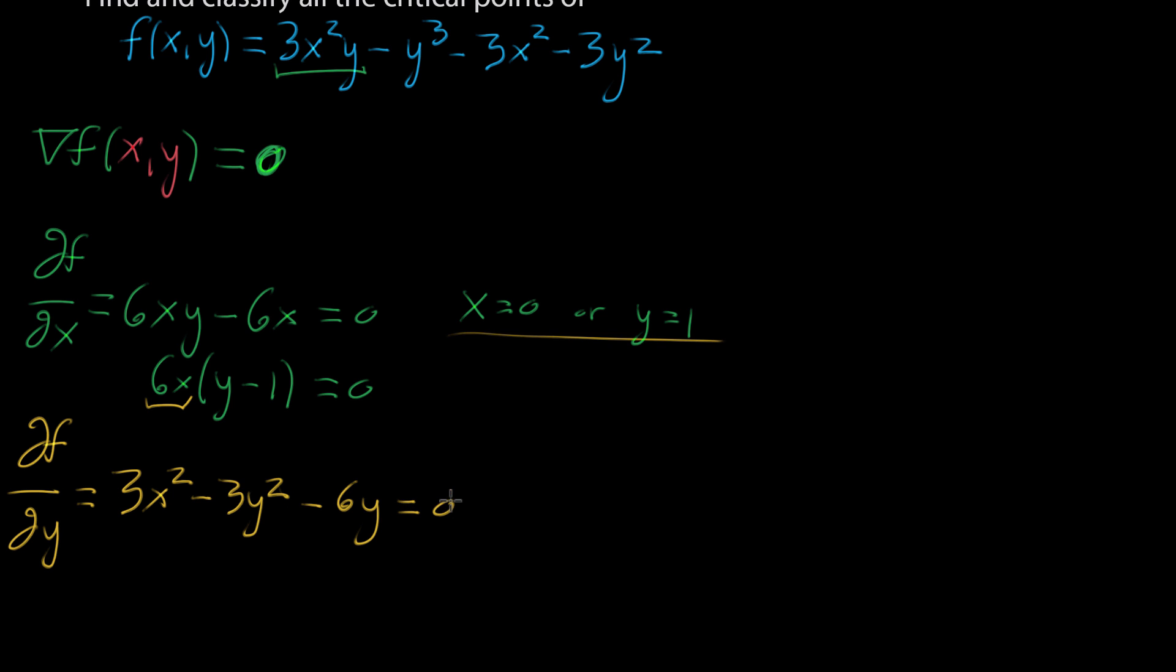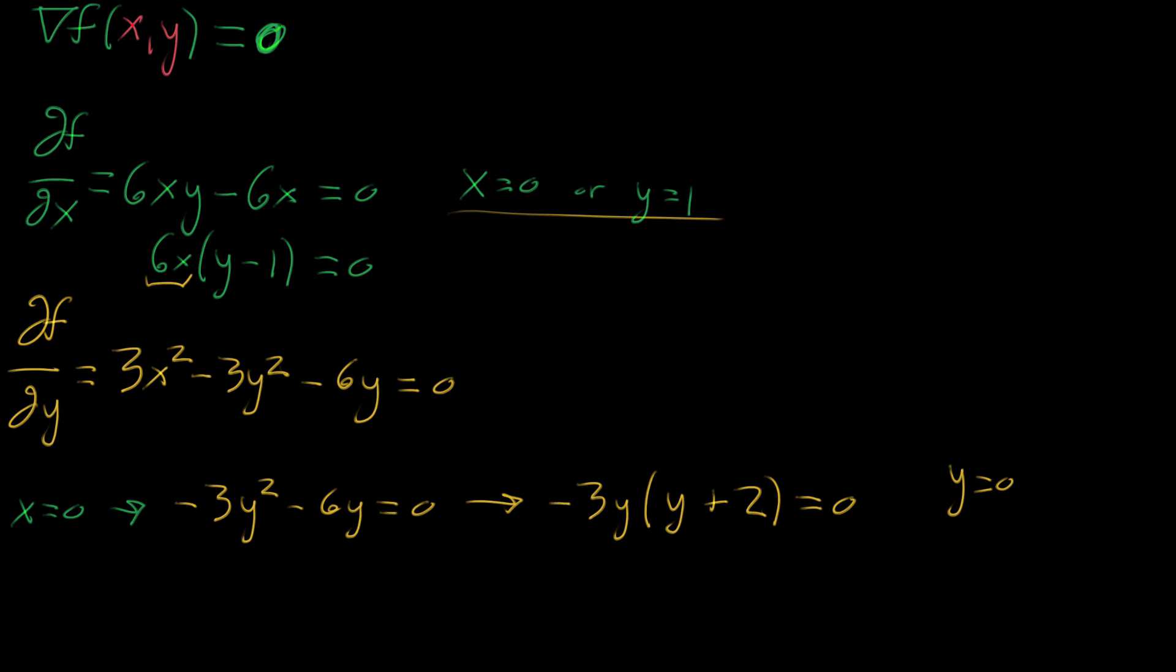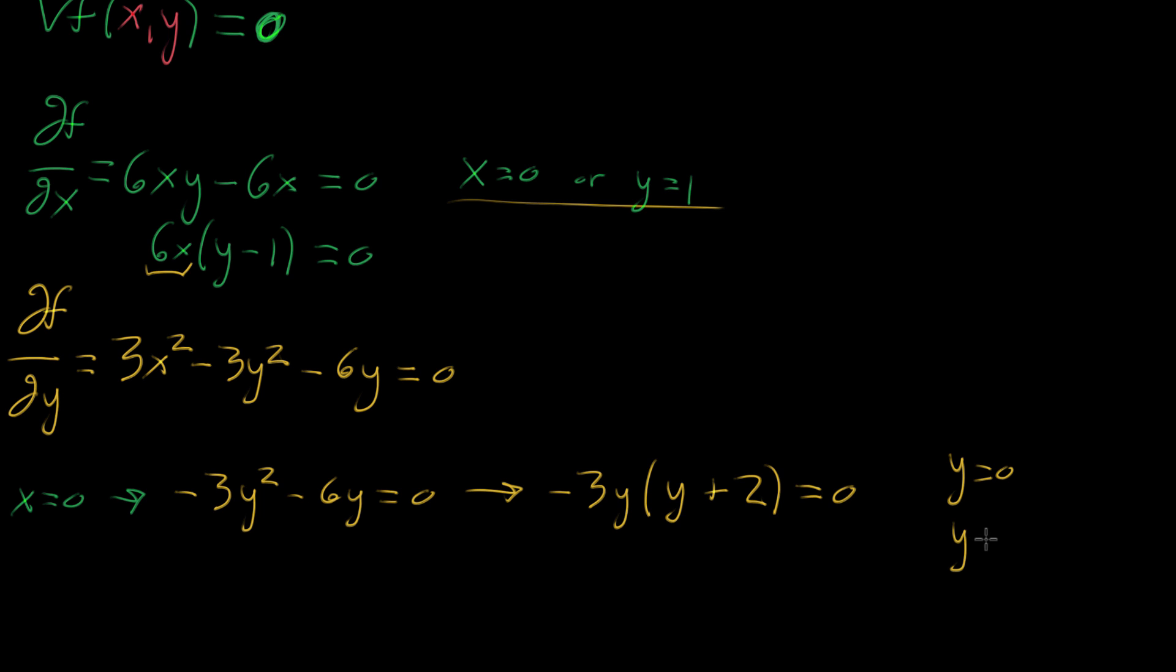For the second equation, when we set it equal to zero, it's not immediately straightforward how to solve for x and y, but because we've already solved one, we can plug them in. If x = 0, then we have -3y² - 6y = 0. We can factor out -3y, which gives -3y(y + 2) = 0. So either y = 0, or y = -2.